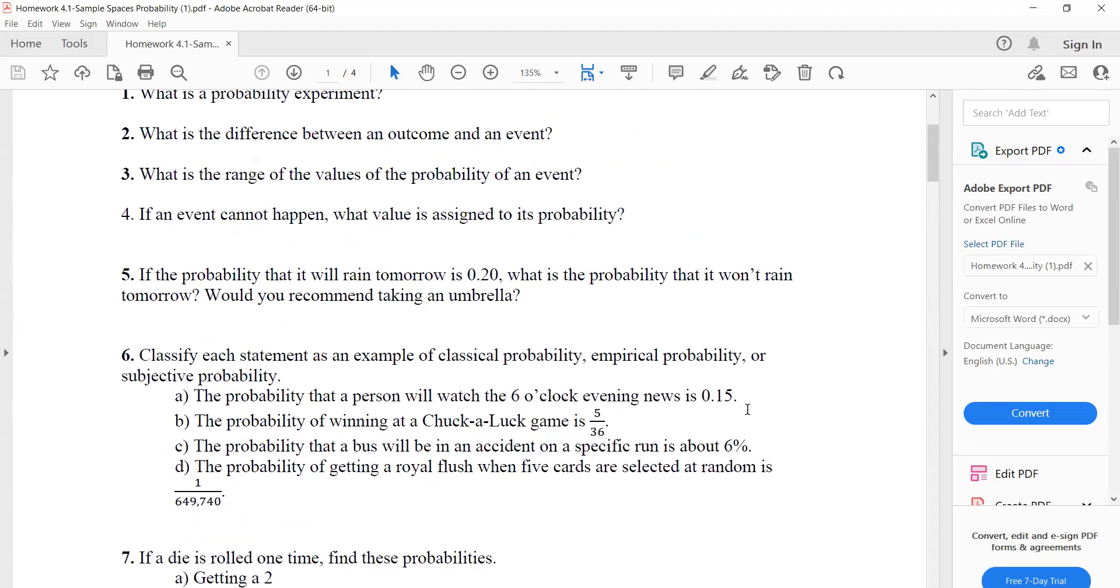Okay, so you said number five was giving you problems. Let's take a look. If the probability that it will rain tomorrow is 0.2, what is the probability that it will not rain? Would you recommend taking an umbrella?